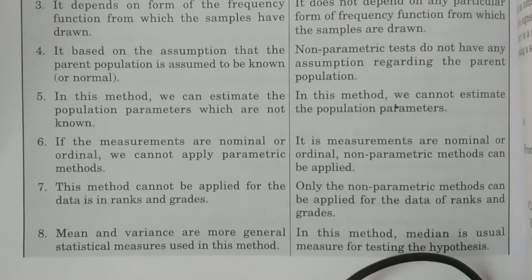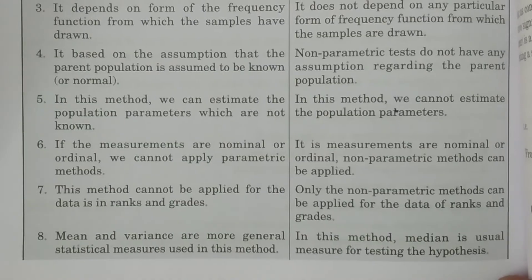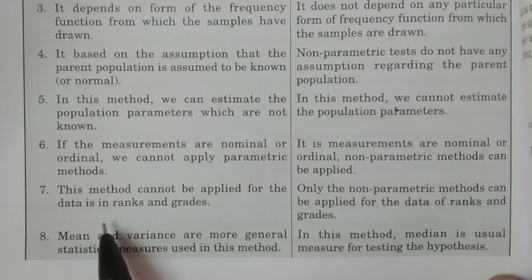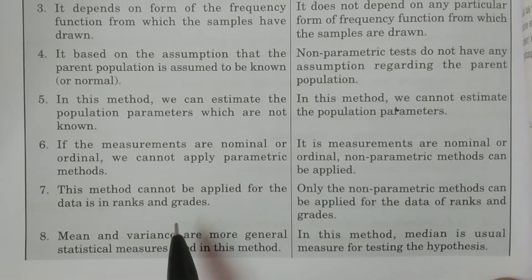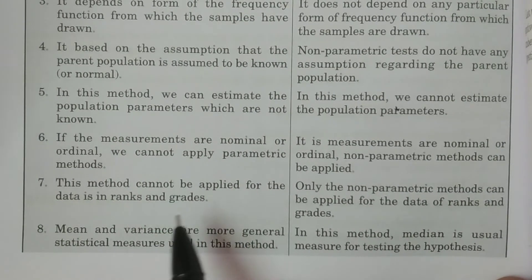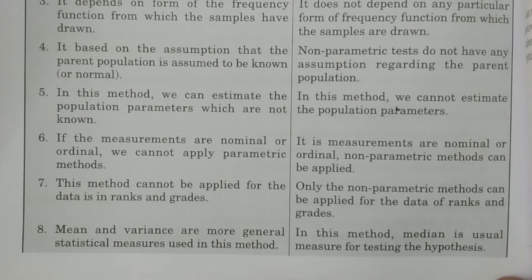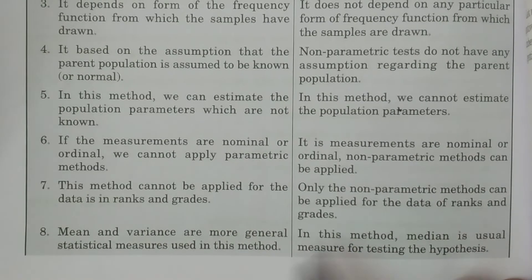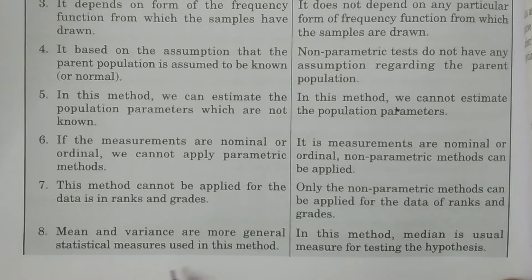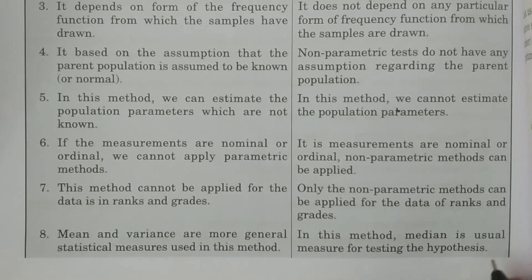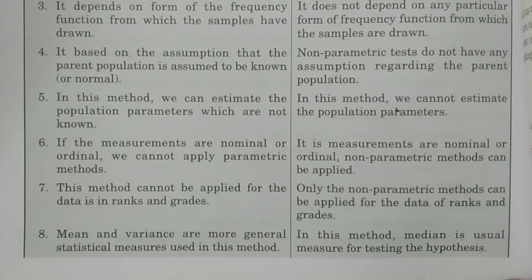If data are given in ranks and grades, parametric methods cannot be applied — only non-parametric methods can be applied for ranked and graded data. Additionally, mean and variance are the general statistical measures used in parametric methods, whereas in non-parametric methods, the median is the usual measure used for testing the hypothesis.